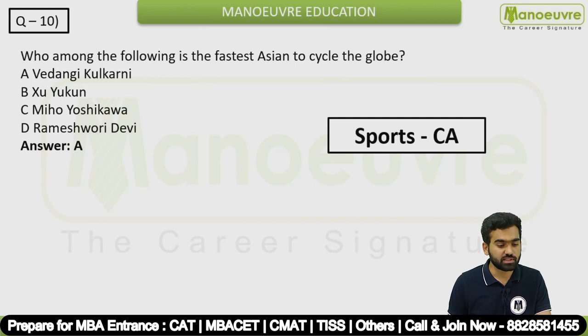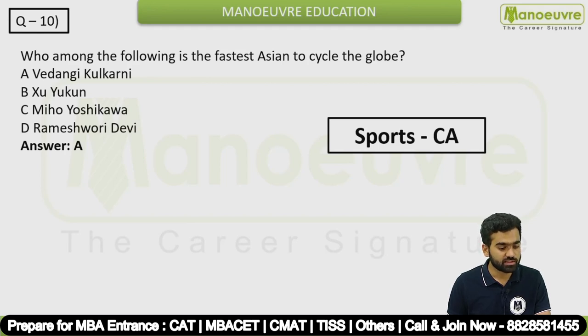Question 10: Who among the following is the fastest Asian to cycle the globe? This is again a sports-related current affairs question. The answer is option A — Vedangi Kulkarni.